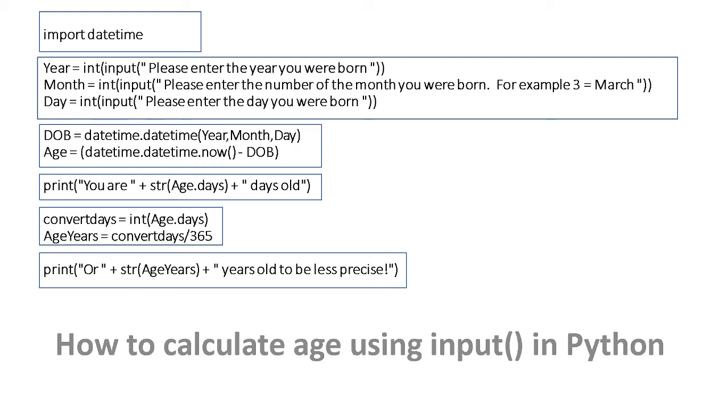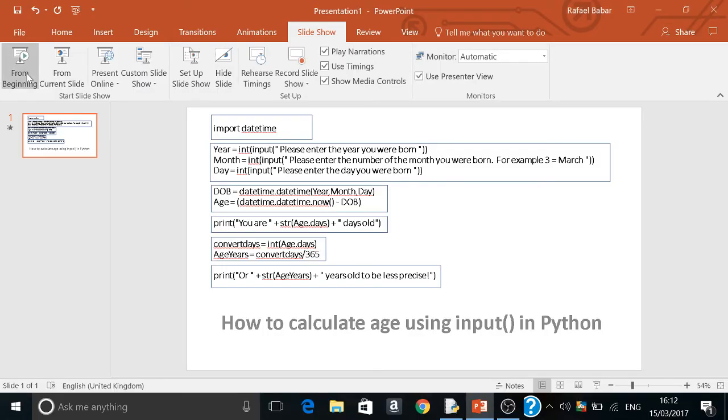Again, the days calculation is extremely accurate. The years is very accurate, might need a little bit of tinkering. And that's it - how to calculate age using the input command in Python. Now many of you will probably want to see that working, so I'm going to show you now.